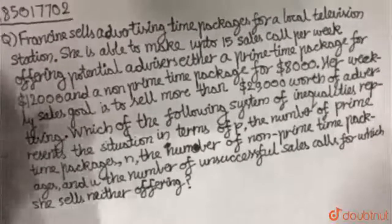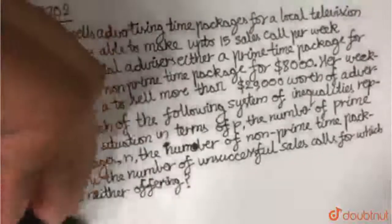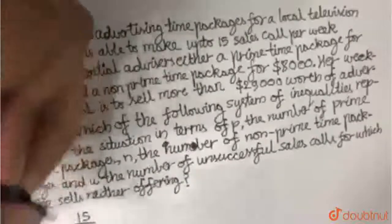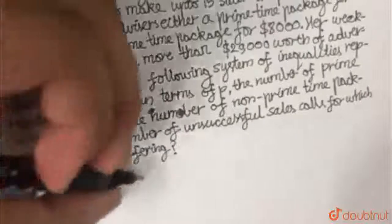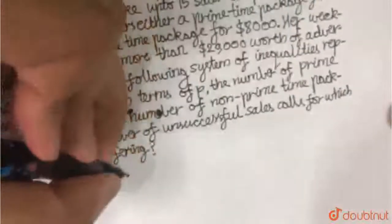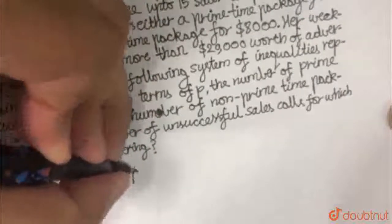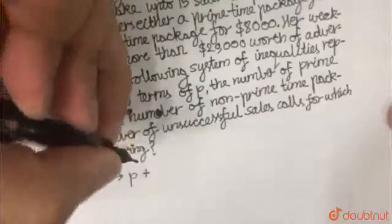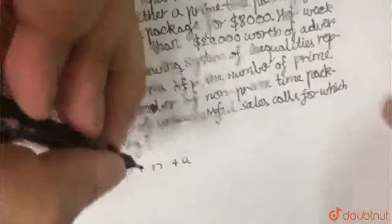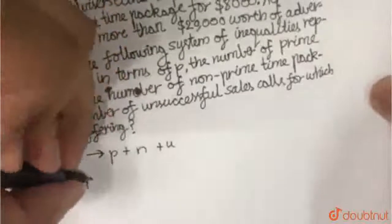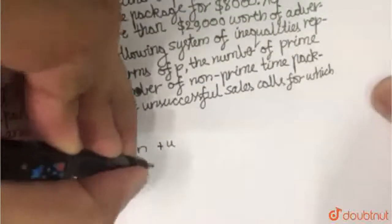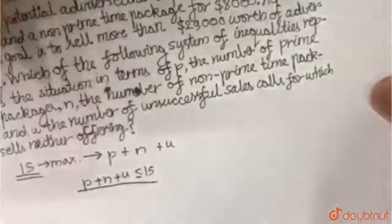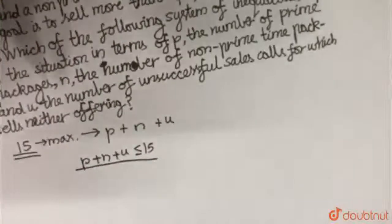Firstly, she can only make up to 15 calls per week, so the maximum number of calls is 15. These 15 calls include the number of prime time sales calls plus the number of non-prime time sales calls plus the number of unsuccessful calls. So N plus P plus U should be less than or equal to 15, because 15 is the maximum limit of calls she can make, as given in the question.